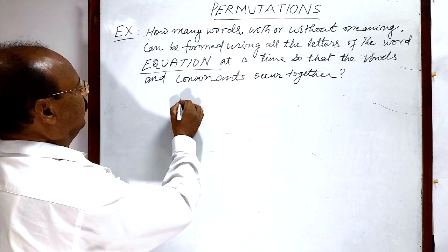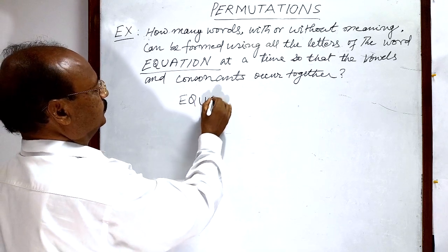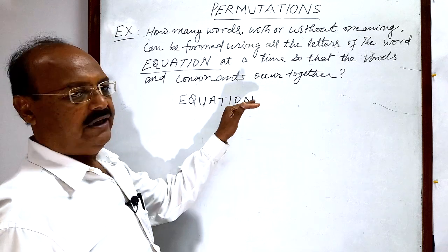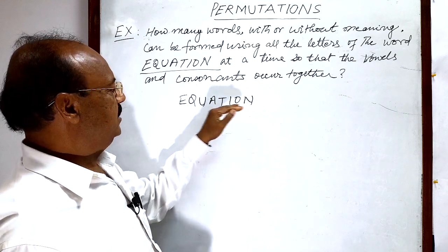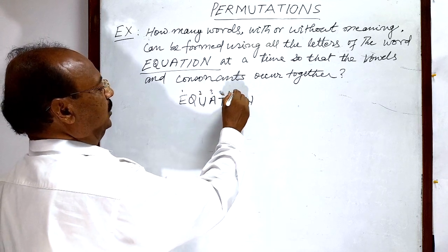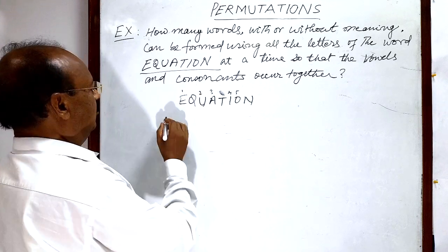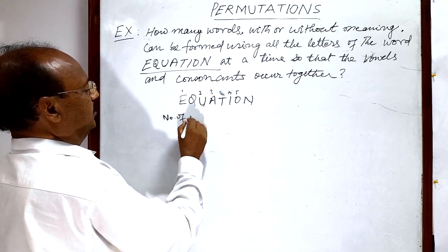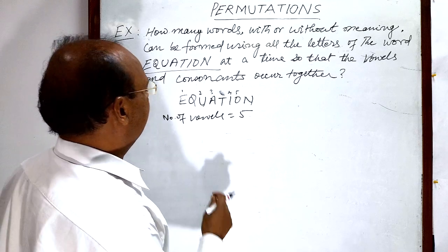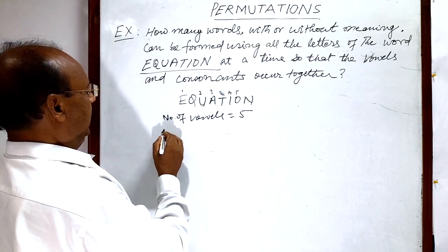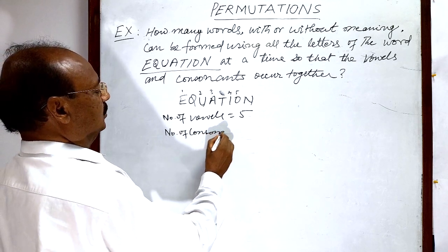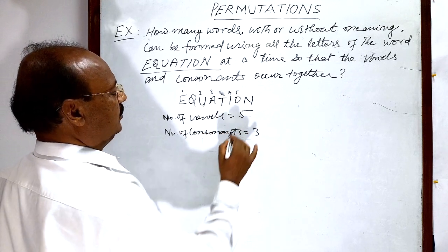The given word is EQUATION. Here the total number of letters is 8. Out of these 8 letters, we have 5 vowels — E, Q, U, A, T, I, O, N — counting them: 1, 2, 3, 4 and 5. So the number of vowels is equal to 5, and the remaining are consonants: 1, 2, 3. The number of consonants is equal to 3.